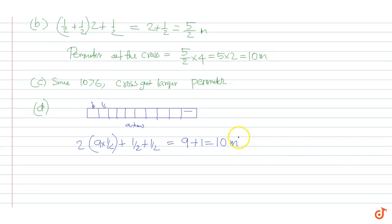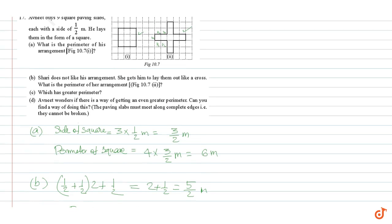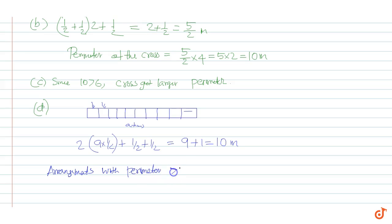The maximum perimeter will always be 10 meters. An arrangement with a perimeter greater than 10 meters cannot be found. Therefore, a perimeter larger than 10 meters cannot be achieved with these slabs.